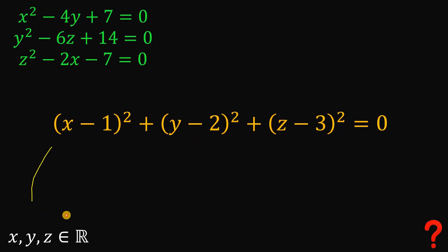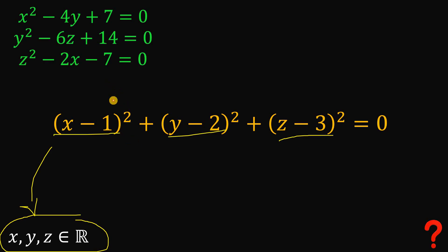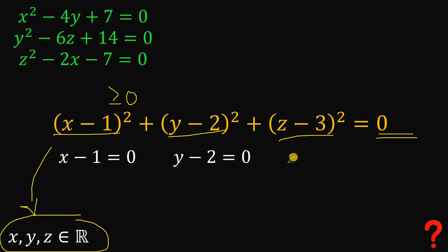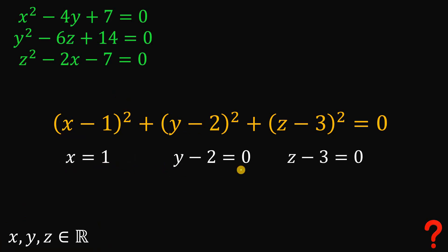Since x, y, and z are all real numbers, and since they are all raised to the power of 2, their values must always be greater than or equal to 0. In order for their sum to equal 0, each term must individually equal 0. So: x minus 1 equals 0, giving x equals 1; y minus 2 equals 0, giving y equals 2; and z minus 3 equals 0, giving z equals 3.